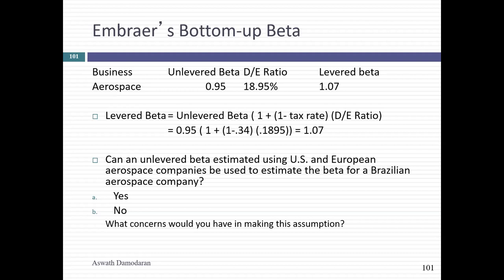Now I want to talk about practical challenges in applying this. One of the companies I'm estimating a cost of capital for is Embraer in 2004 — a Brazilian aerospace company. If you define comparable companies as only Brazilian aerospace companies, you'll run into a brick wall. To estimate Embraer's beta, I used the unlevered beta across aerospace companies globally. The pushback I get is: you cannot use betas of non-Brazilian companies for a Brazilian company. My response: why not?